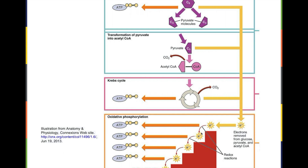So what happens to these electrons — do they go down these stairs forever? No. The final acceptor of the electron at the end of cellular respiration is oxygen. This is the step where oxygen is used in cellular respiration — the oxygen that you breathe in comes into play. Oxygen in combination with two positively charged hydrogen ions and electrons makes water.